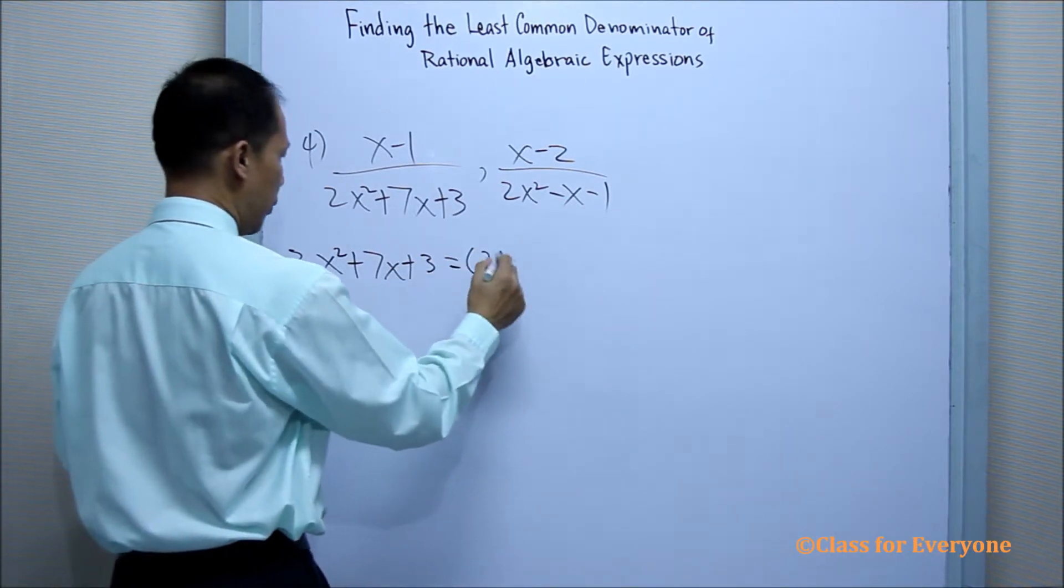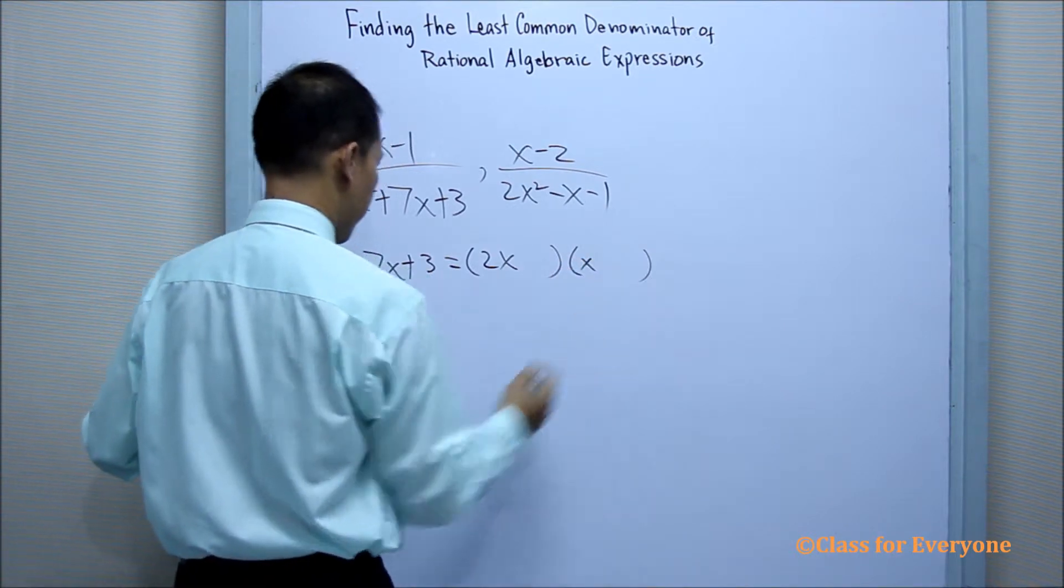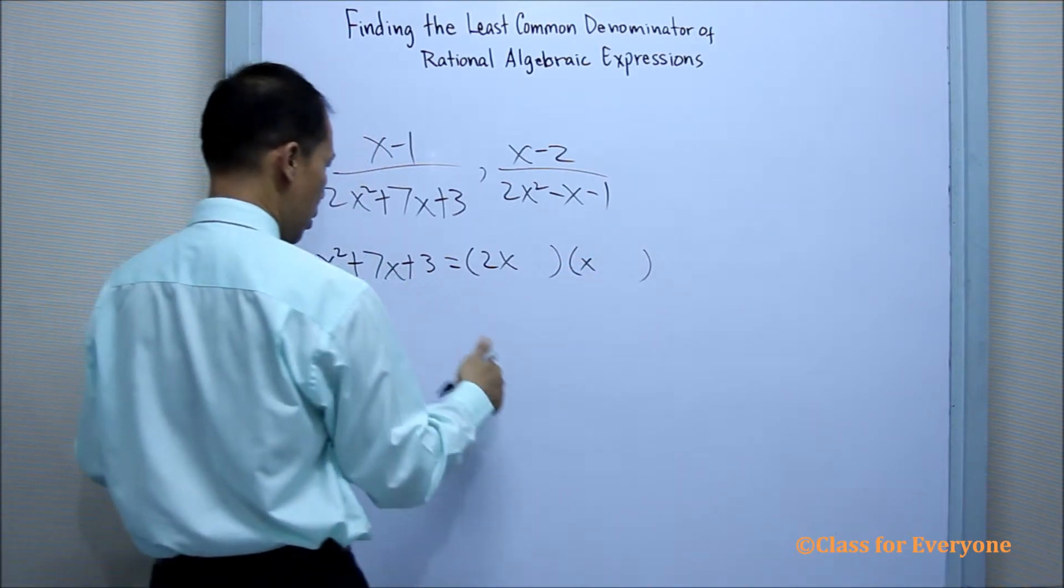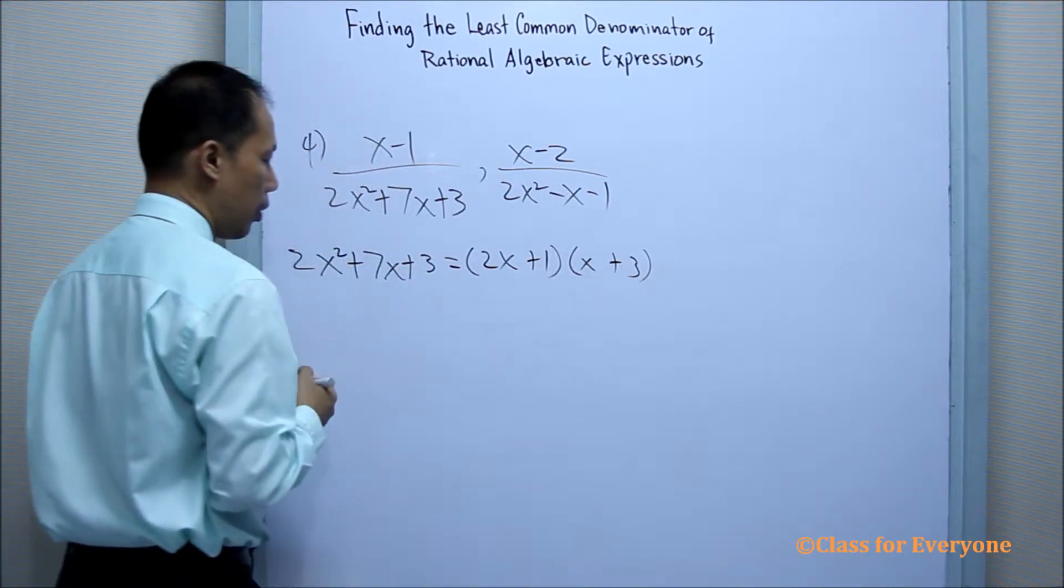We have 2x and then there is an x, positive 3. So we have here positive 3, positive 1. Let us check.